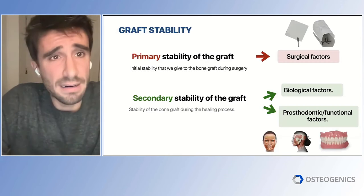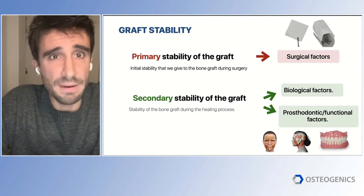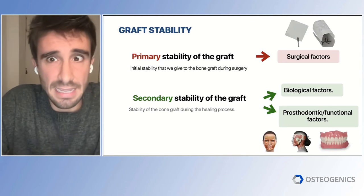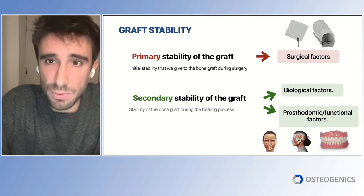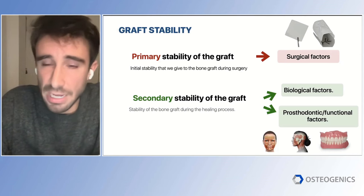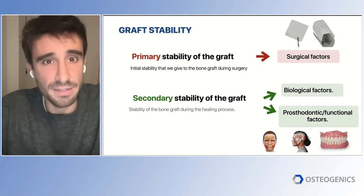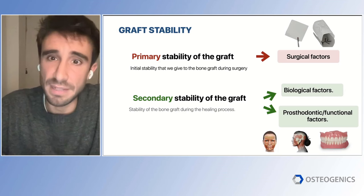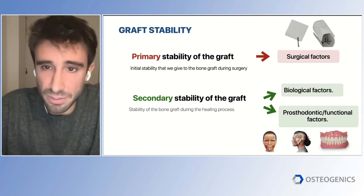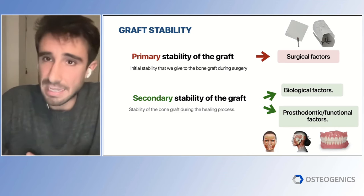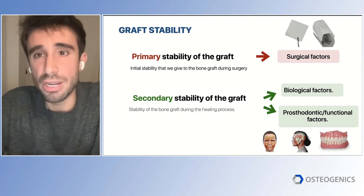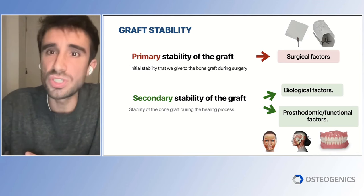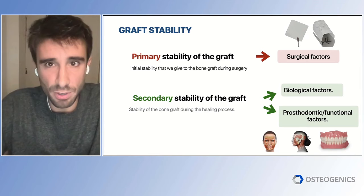There are several factors related to graft stability. First, what we do with our hands — what protocols we follow during surgery to ensure graft stability at the starting point. But there are also biological factors and mechanical factors during healing time that will have a big impact. At the beginning of this lecture, we are going to focus on these surgical factors — what we can do during our surgery to boost our results and have better outcomes in our GBR procedures.